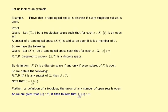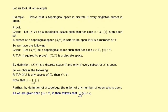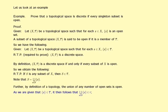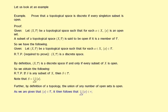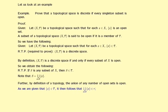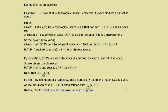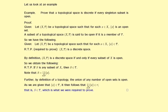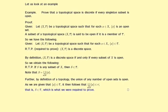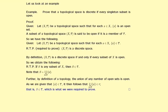As we are given that {x} is in τ, it then follows that the union of the singleton sets {x} as x runs over the members of S is a union of open sets and so is in τ. But what is the union of {x} for x in S? It's just the set S. So S is in τ, which is what we are required to prove.